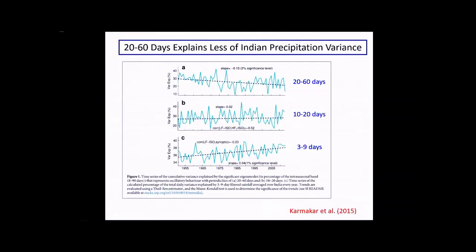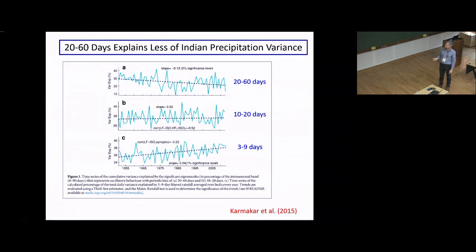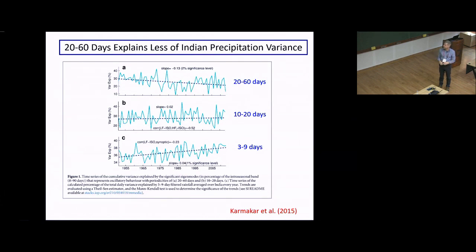This has implications for the BSISO as well, and it's low-hanging fruit to check whether BSISO changes are commensurate with MJO changes in CMIP5 simulations. Also intriguing is an analysis showing that the 20-to-60 day time scale is actually decreasing in variance explained for Indian precipitation relative to synoptic time scales. I'm interested in understanding this trend and how it relates to CMIP5 model projections. If this trend continues, the BSISO might become a less important factor for Indian precipitation in a future warmer climate, which would be really interesting.